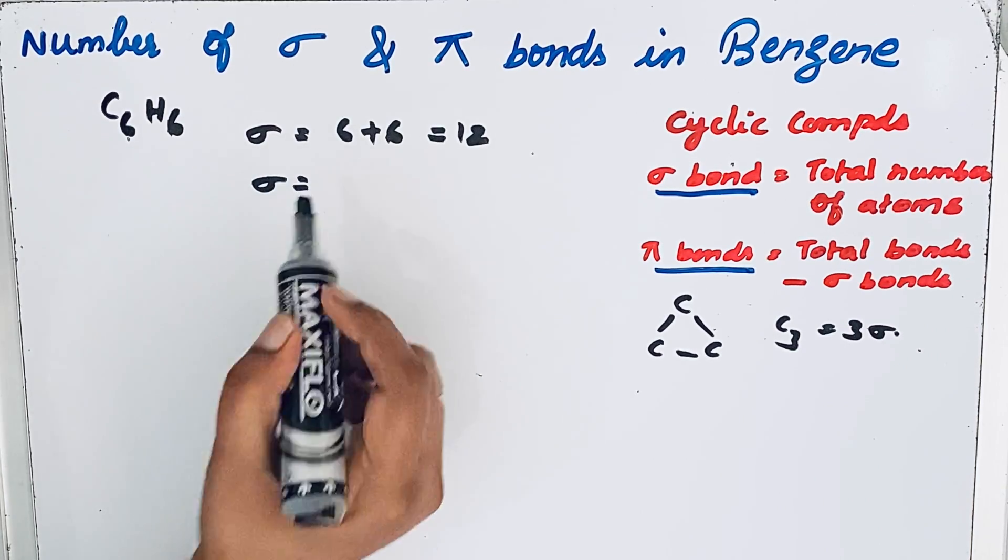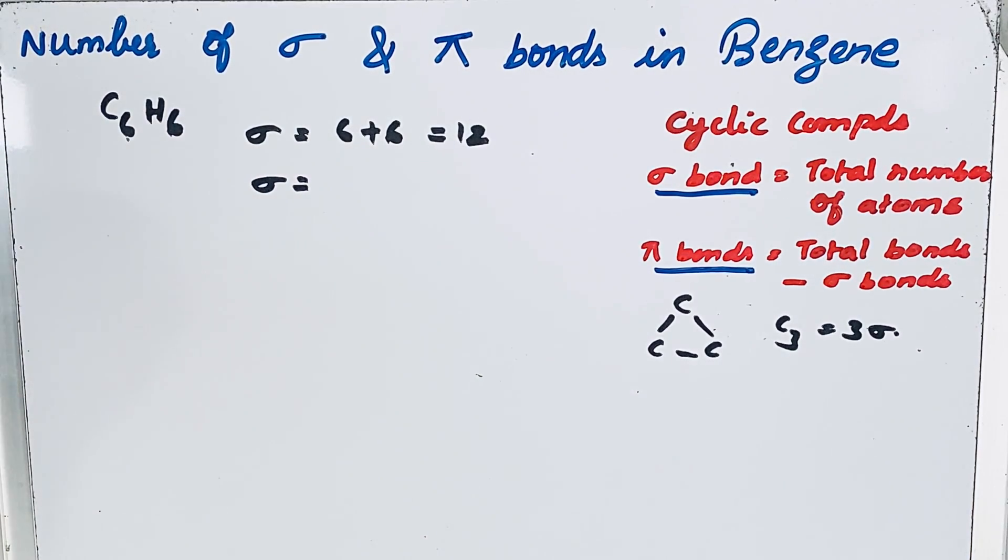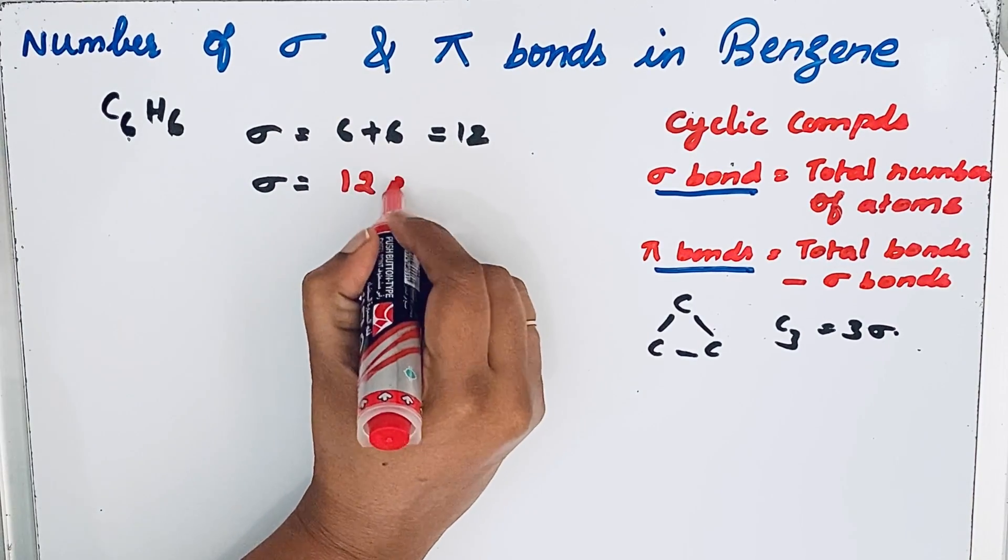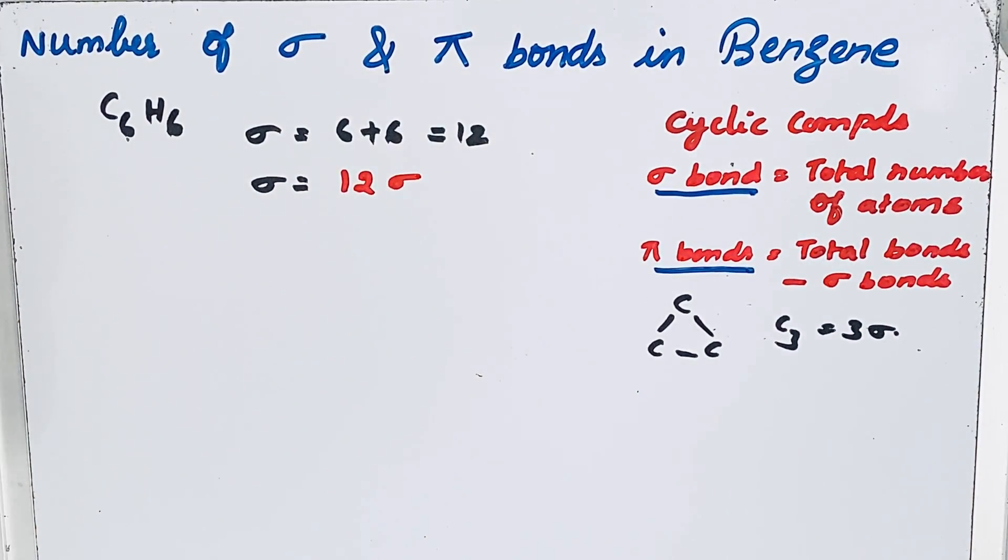So how many sigma bonds do we have here? 12 sigma bonds in benzene molecule.